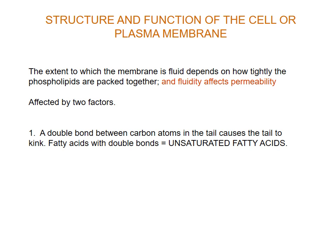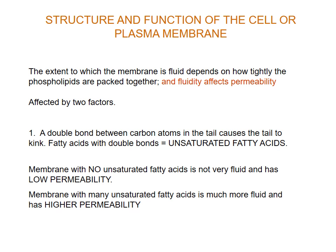First, when there is a double bond between carbon atoms in the fatty acid tails, this causes the tail to bend or kink. Fatty acids with double bonds are known as unsaturated fatty acids. When you have a membrane with no unsaturated fatty acids — no fatty acids with kinks in their tail — the cell membrane is not very fluid and therefore has relatively low permeability. It's not very easy to get in and out of a cell if there are no unsaturated fatty acids.